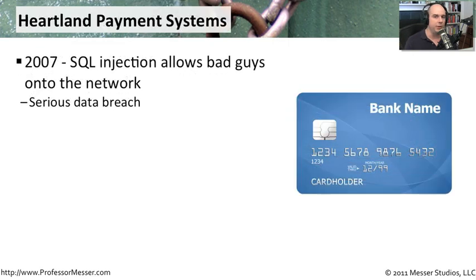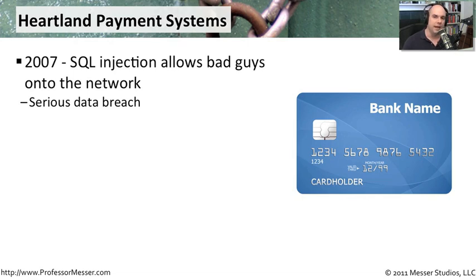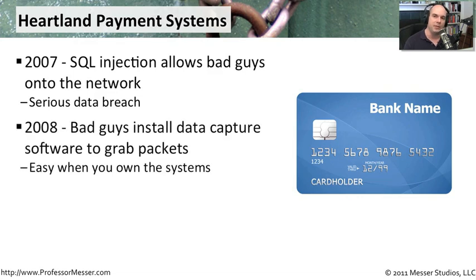A good example of where you might want DLP is the breach at Heartland Payment Systems — an organization that processes credit cards, making it an extremely valuable target for bad guys. In 2007, unfortunately, the bad guys found a SQL injection vulnerability on one of the Heartland Payment Systems machines and got access into their network. From there, they just sat and started gathering information about where they were, and Heartland had no idea they were in place.